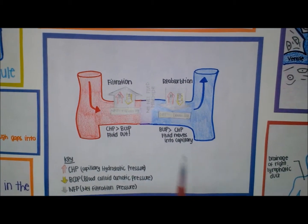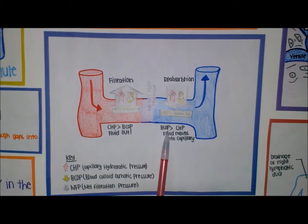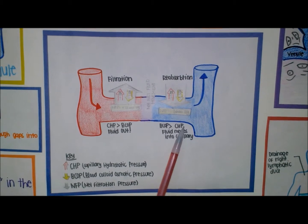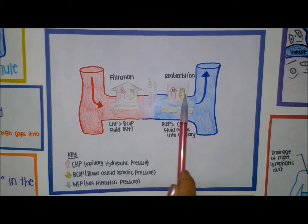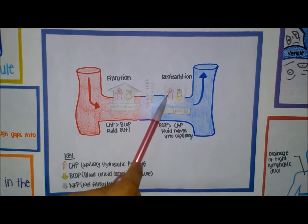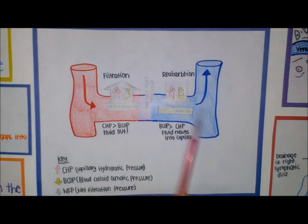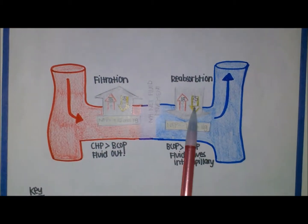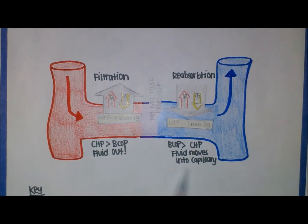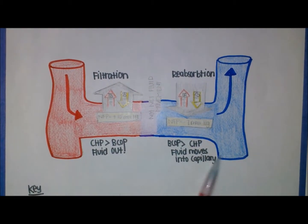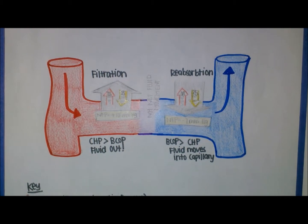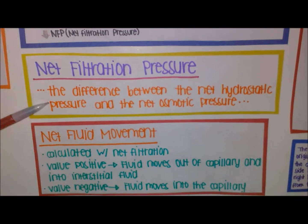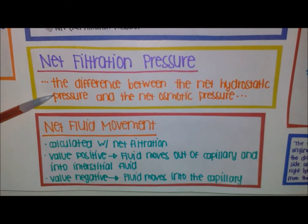On the venule end, blood colloid osmotic pressure is greater than capillary hydrostatic pressure. Capillary hydrostatic pressure is 18 mmHg and blood colloid osmotic pressure is 25 mmHg, so fluid moves into the capillary and reabsorption occurs.